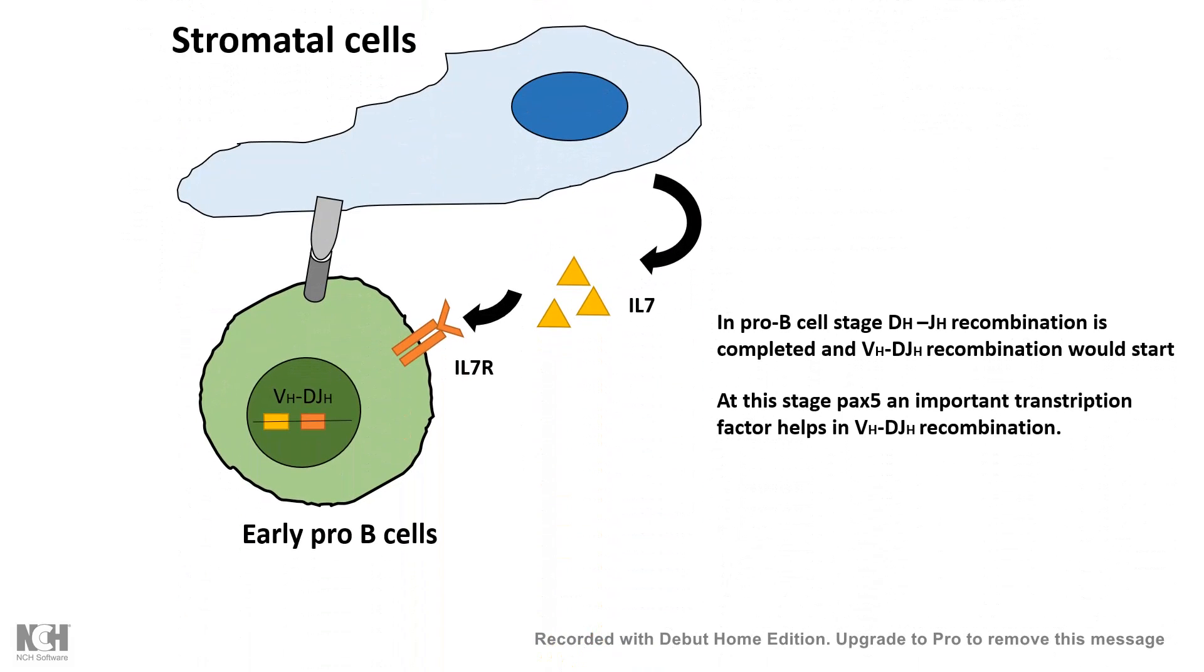When it progresses to the early pro B cell stage, interleukin-7 from stromal cells provides signaling that helps in the complete VDJ recombination process. These external signals act on internal transcription factors, which help by producing recombinase genes and other aspects of recombination.